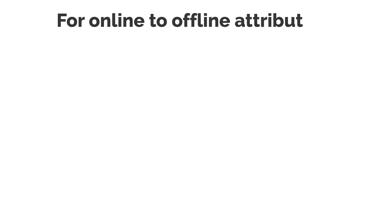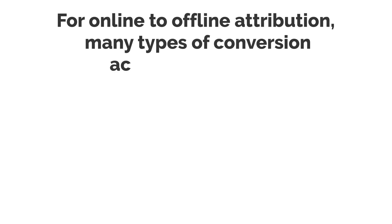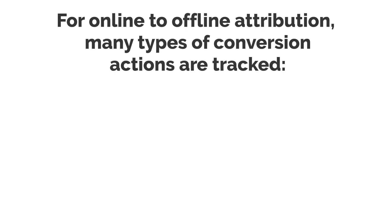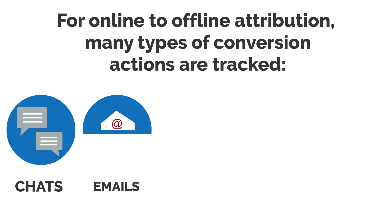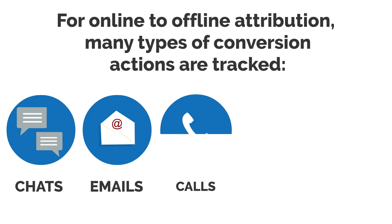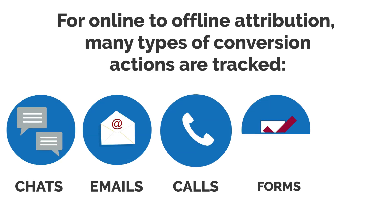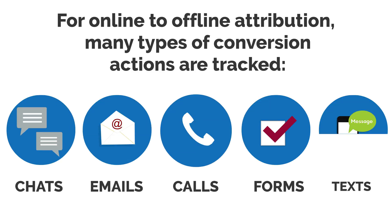For online to offline attribution, many types of conversion actions are tracked, such as chats, emails, calls, forms, and texts.